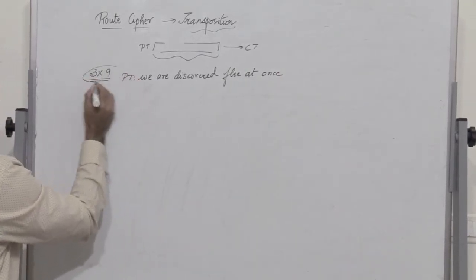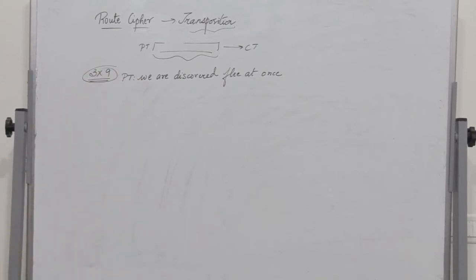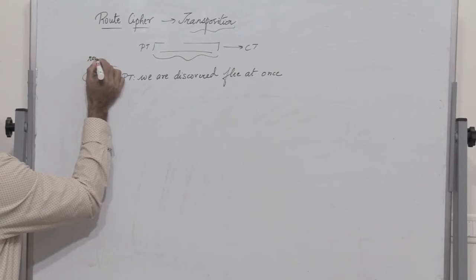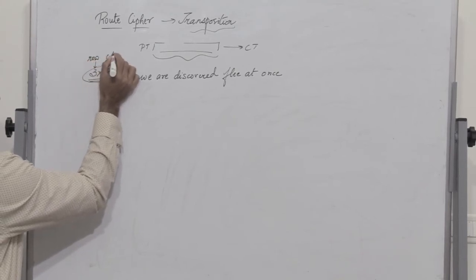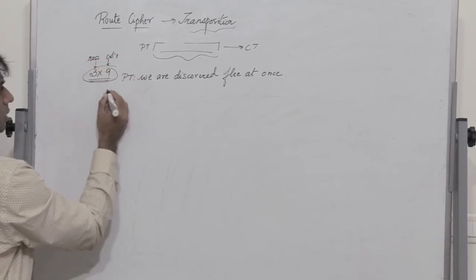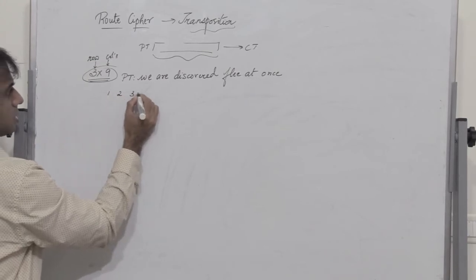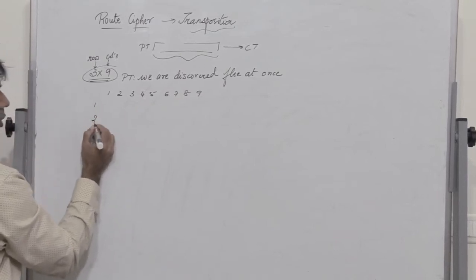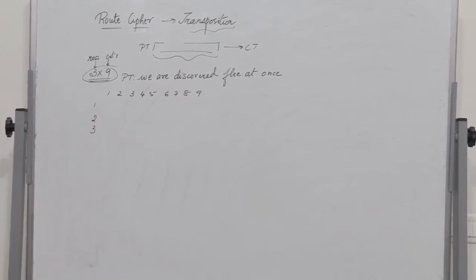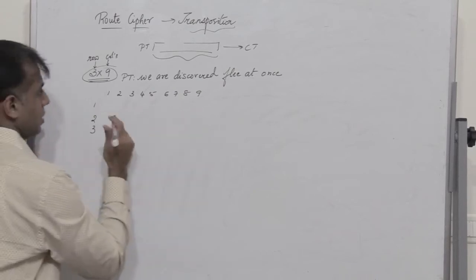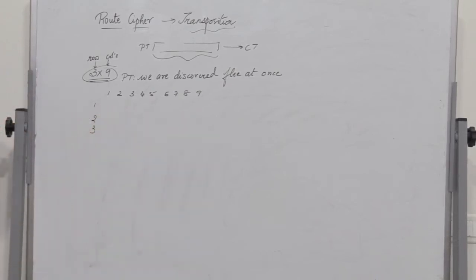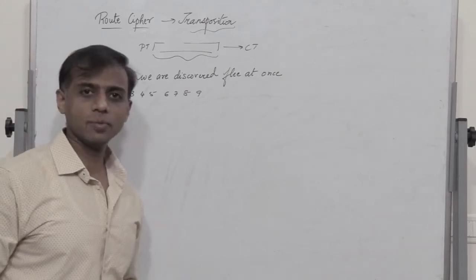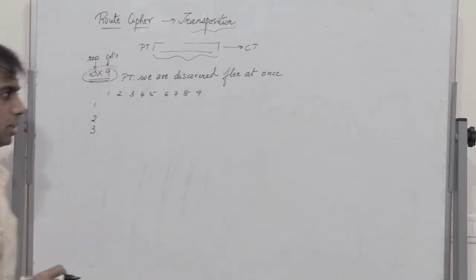So this is the plain text. What am I doing? I am writing it in the form of a matrix or a grid where there are 3 rows and you have 9 columns. So I write the columns 1, 2, 3, 4, 5, 6, 7, 8, 9 and there are 3 rows. We have an option of writing the alphabets either column wise or row wise. I will write them column wise.